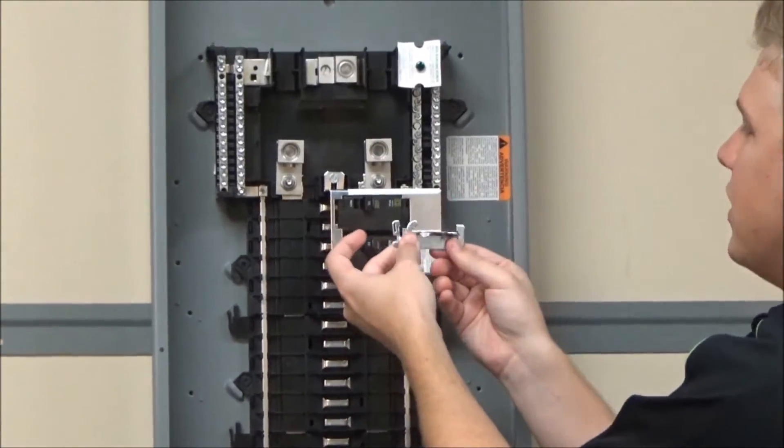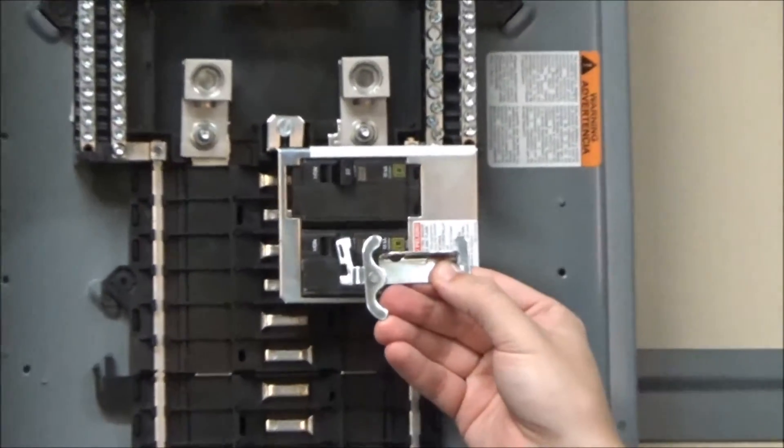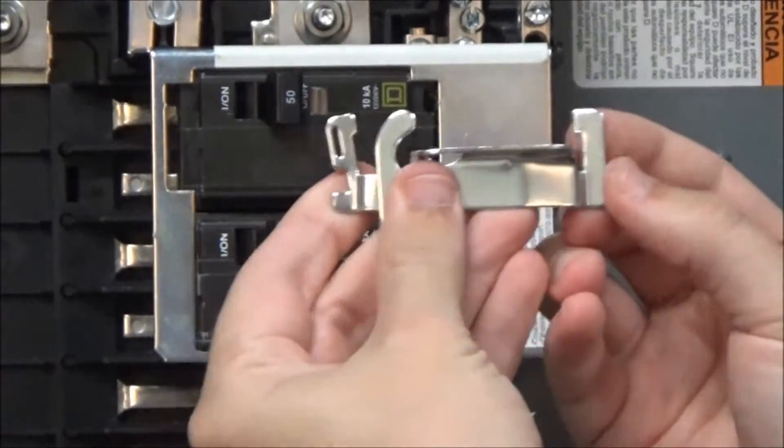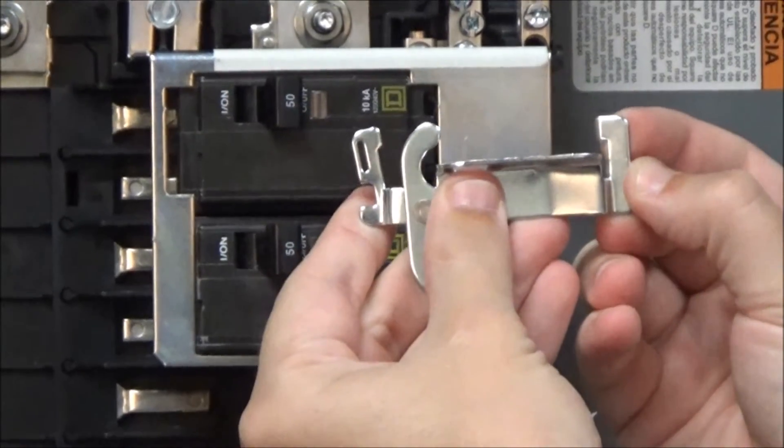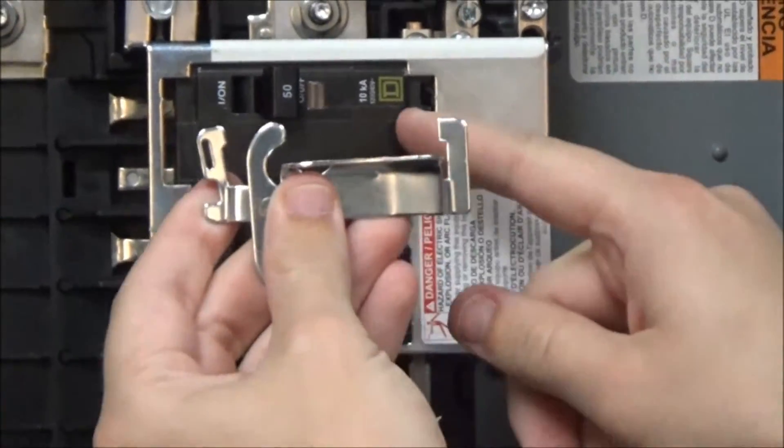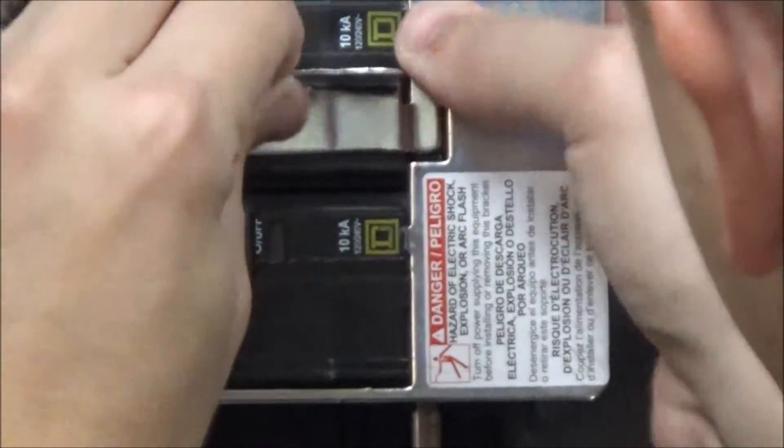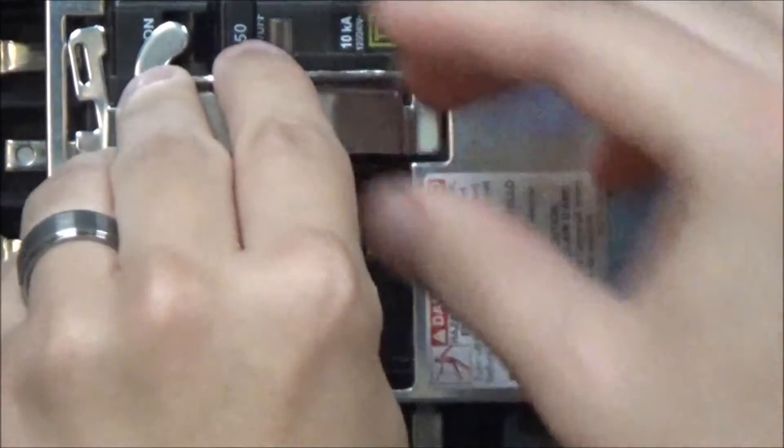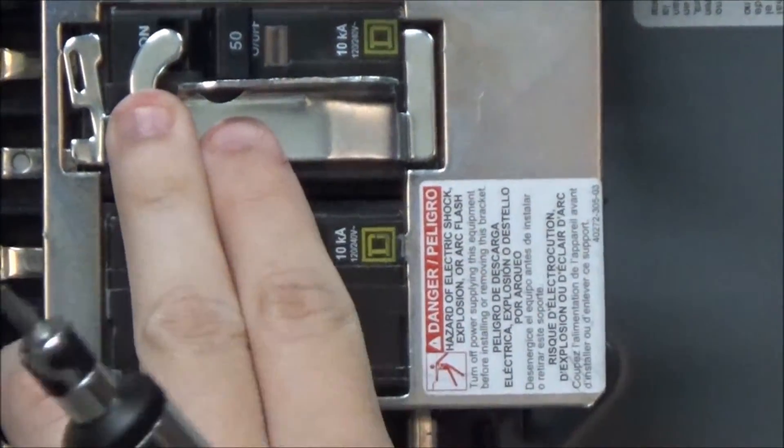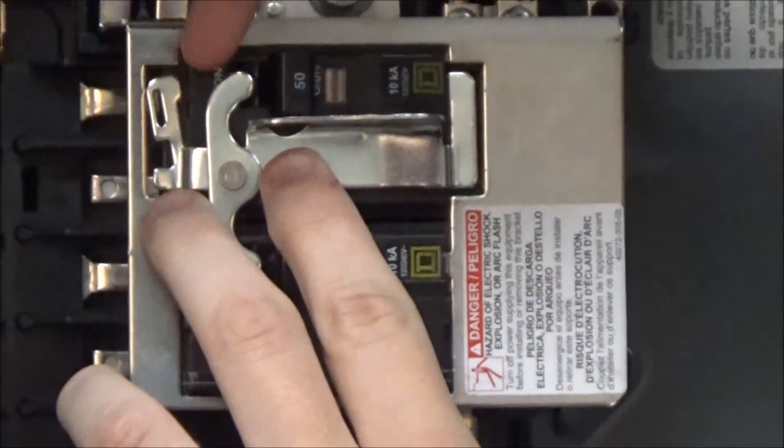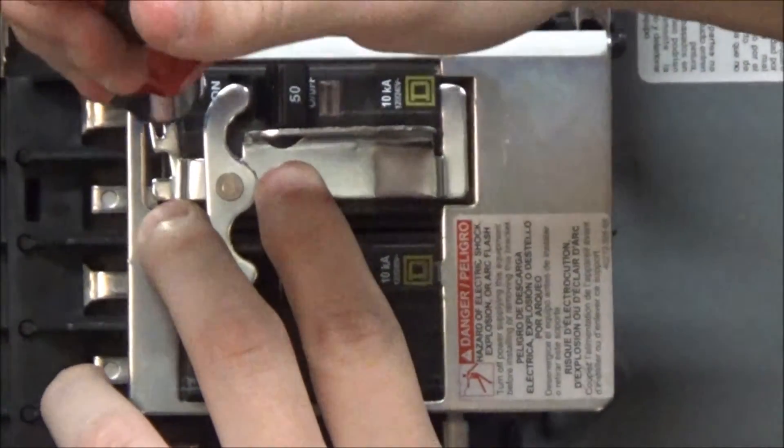The second piece is the interlock kit, which you'll install by sliding this tab into the slot on the top breaker and then using a flathead screwdriver to slide this slot into the top part of the breaker.